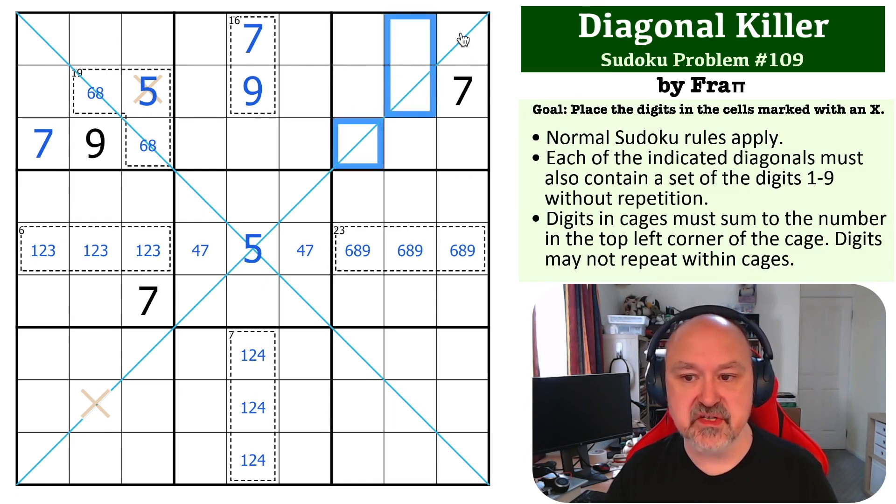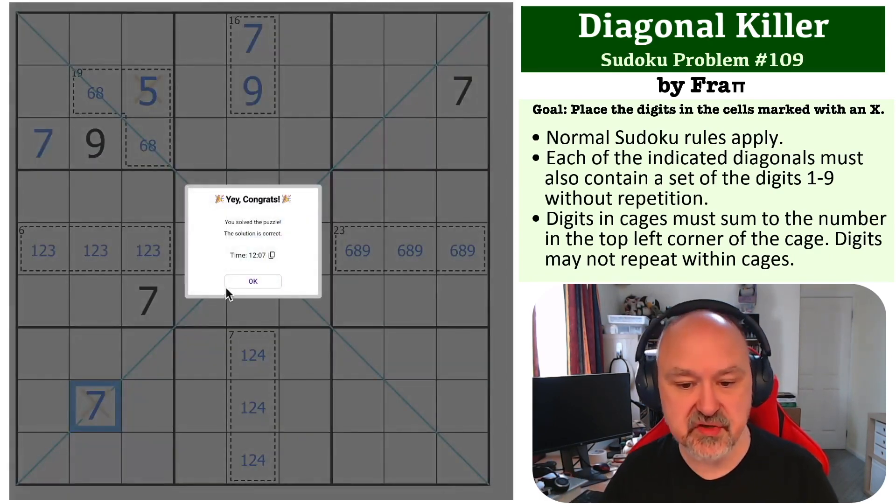It can't go in those three cells because there's a 7 in the box. It can't go in those three cells because there's a 4, 7 pair in the box, so it has to go in one of those three, but that cell is seen by that 7, so it can't be there, and this cell is seen by that 7, so this becomes a 7, and that is the solution to the problem.